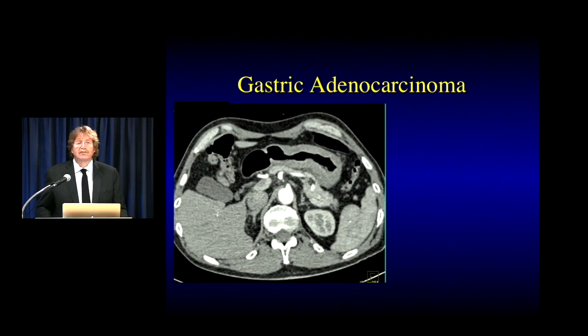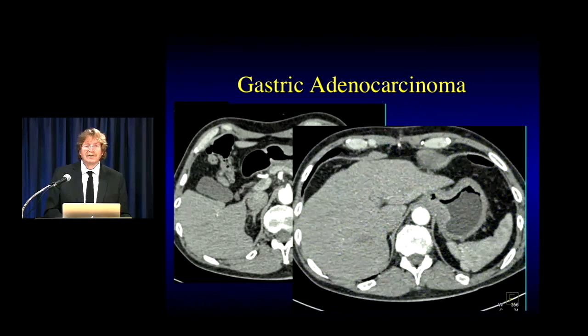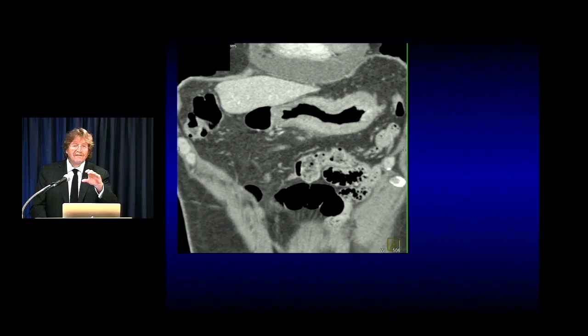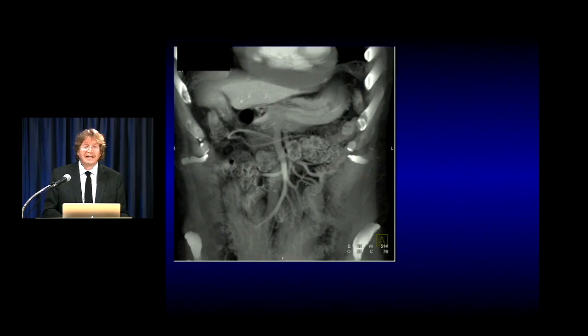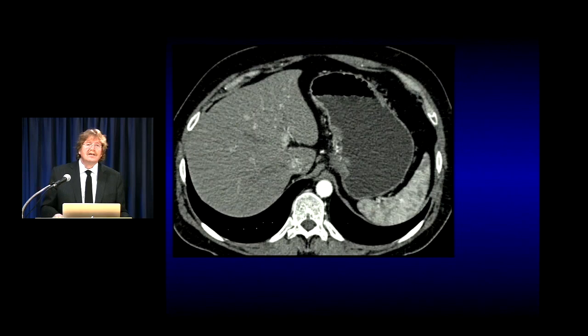Another case describes what's best called linitis plastica. You might say it's just wall thickening or underdistension, but you gave enough oral contrast. Looking at the coronals, there's diffuse infiltration — a beautiful example of linitis plastica. Primary gastric cancer can present with linitis plastica; metastasis from breast cancer can also present with linitis plastica.